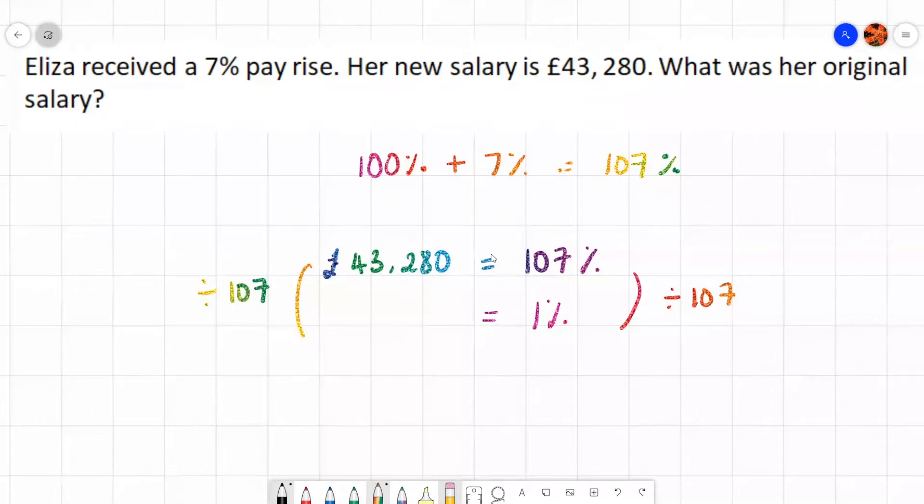So again, this is why we need a calculator. We're going to do 43,280 divided by 107. And I end up with a decimal. I'm just going to write that out. 404.485981. I'm going to leave it as that.